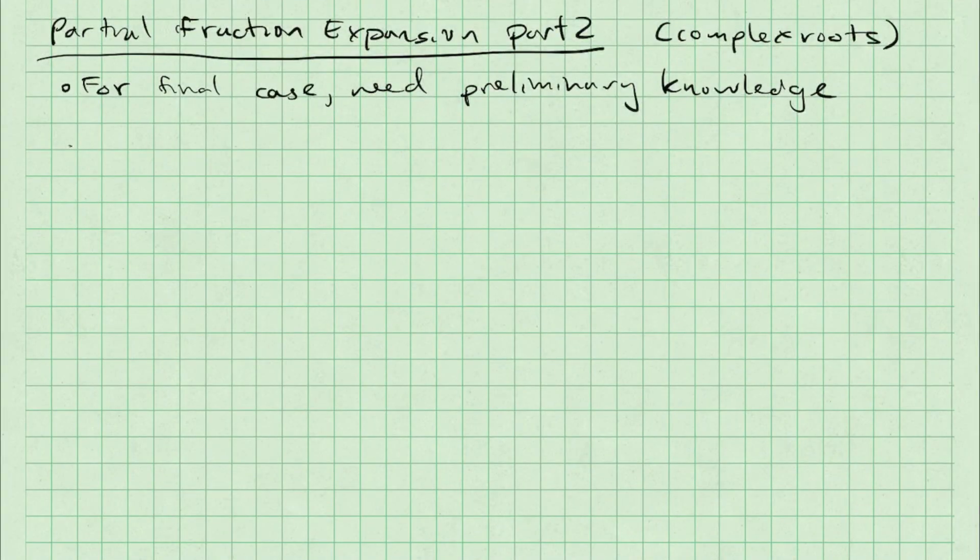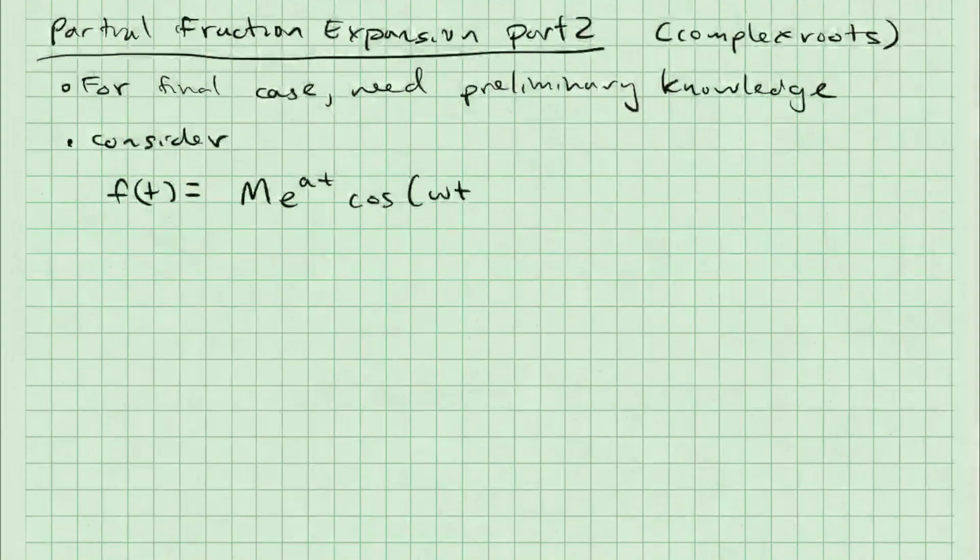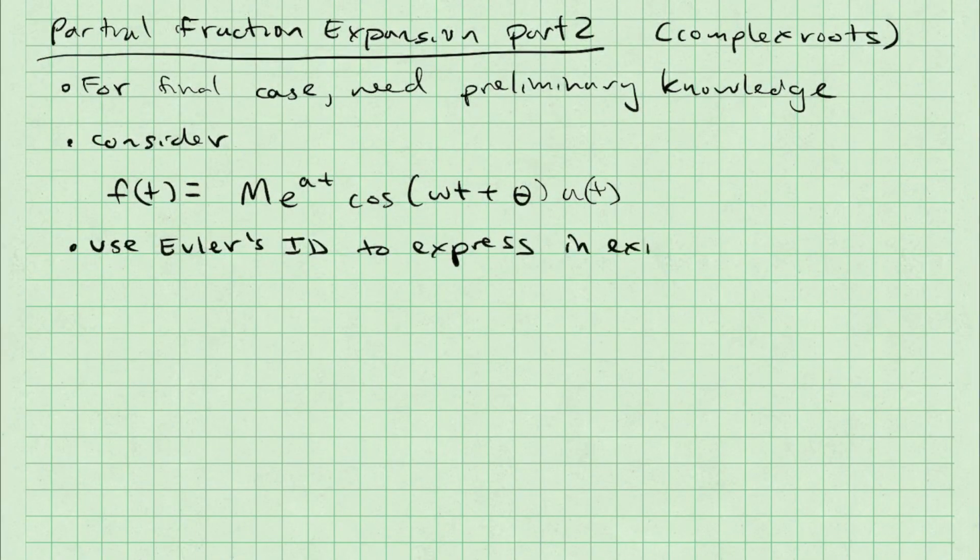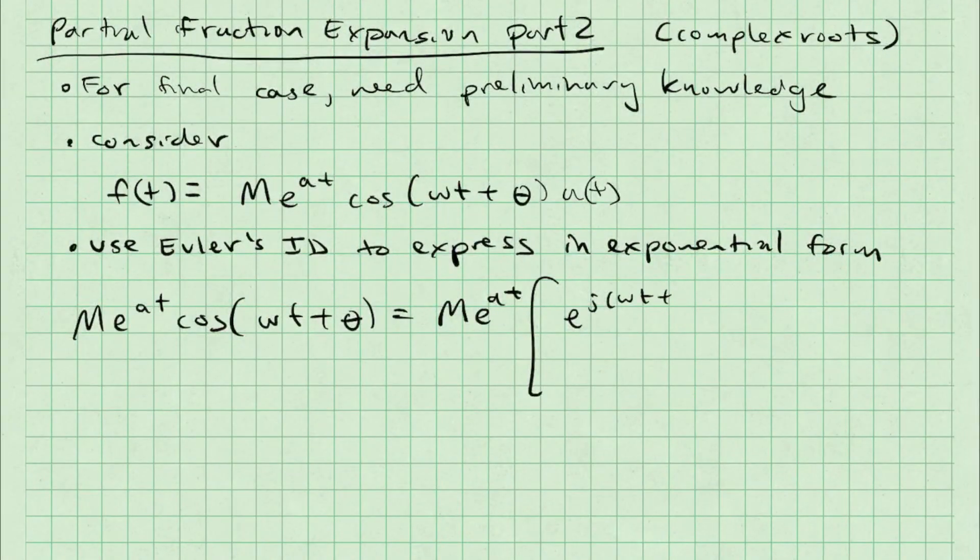Consider the function f of t is equal to m e to the a t cosine omega t plus theta u of t. If we use Euler's identity to express this in exponential form, we get m e to the a t multiplied by e to the j omega t plus theta plus e to the minus j omega t plus theta, all divided by two.